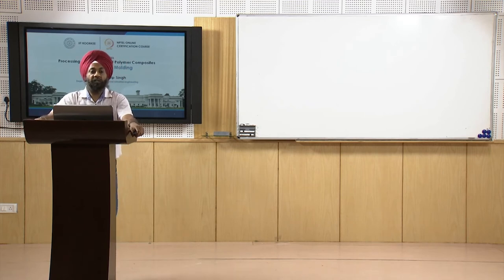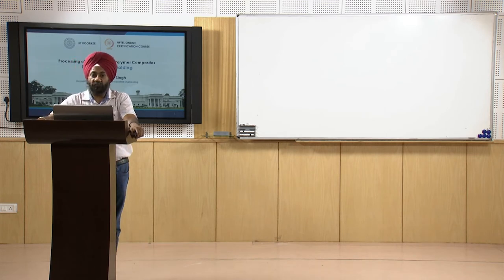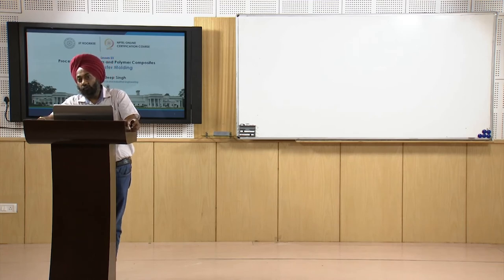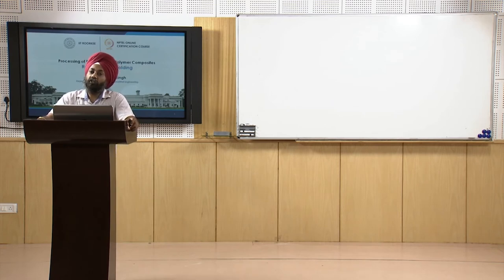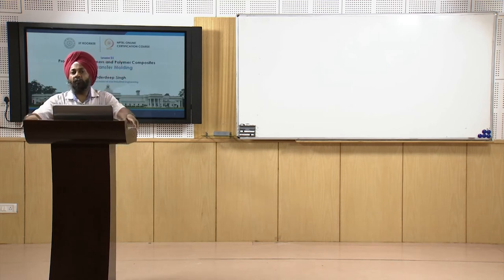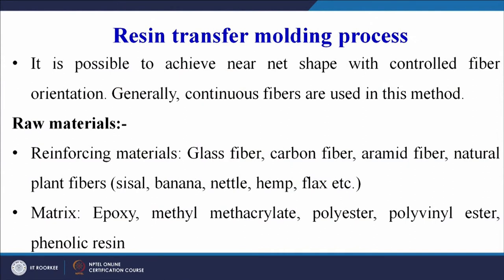The low cost and low-to-medium production quantity aspect substantiates what was already discussed — that the volume of production is a very important criterion. Hand layup also has a long production cycle and is used for low quantities. In resin transfer molding it is possible to achieve near net shape with controlled fiber orientation.